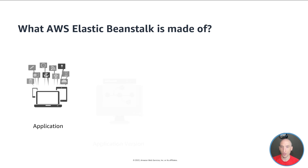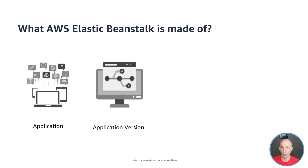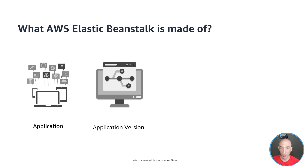The next part is the version of that application. In Elastic Beanstalk, an application version refers to a specific labeled iteration of deployable code for a web application. An application version points to an Amazon S3 object that contains that deployable code, such as a .NET bin directory. An application version is part of an application. Applications can have many versions and each application version is unique. In a running environment, you can deploy any application version you already have uploaded, or upload and immediately deploy a new one. You might upload multiple application versions to test differences, for instance doing a blue-green deployment.